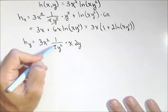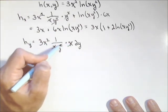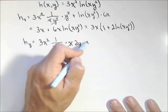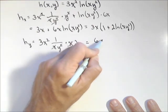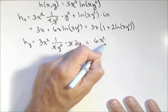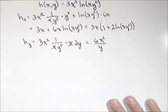Now once again, we'll be able to do a little bit of canceling. And so we get, when all of a sudden, said and done, excuse me, six x squared over y. So there's our h sub y.